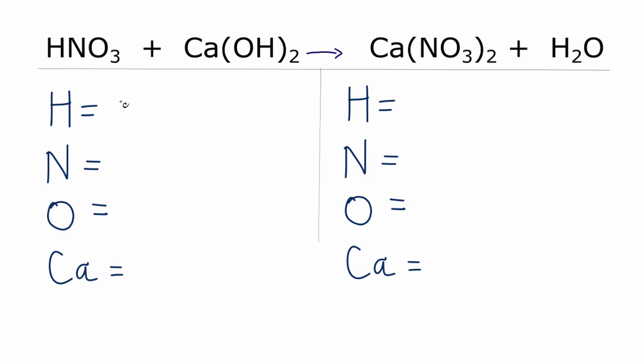So hydrogens, I have one here, and then I have the one here times the two. So two times one, that's two. One plus two, I have three hydrogen atoms. Nitrogens, I just have the one. Oxygens, I have three plus the two times the one, plus two. So I have five oxygens, and I only have the one calcium.